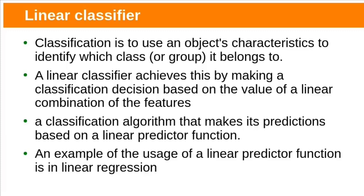In previous class we have seen linear regression. Today let us see linear classifier. Classification is a task which identifies class or group an object belongs to based on object characteristics. Linear classifier achieves this by making classification decision based on the value of linear combination of features. It's a classification algorithm that makes its predictions based on linear predictor function. An example of linear predictor function is we have seen it in linear regression: y equal to wx plus b.